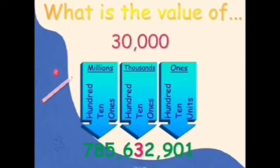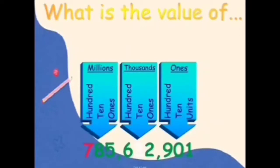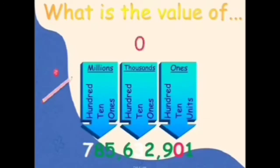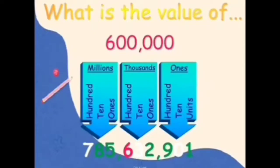What is the value of three? It is thirty thousand, because three times ten thousand is thirty thousand. The value of seven is seven hundred million. The value of zero is zero, because zero times ten is zero. The value of six is six hundred thousand, since six times hundred thousand is six hundred thousand.